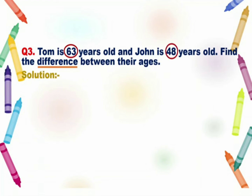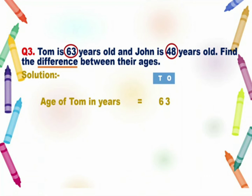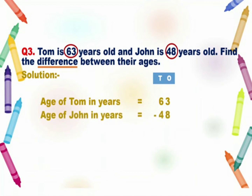In the first line we will write: age of Tom in years is equal to 63. In the second line we will write: age of John in years is equal to 48. As the keyword here is 'difference', we have to subtract 48 from 63 to find the difference in their ages.